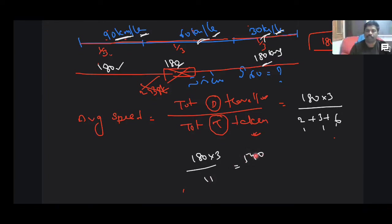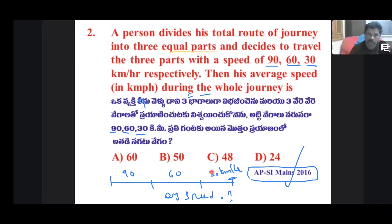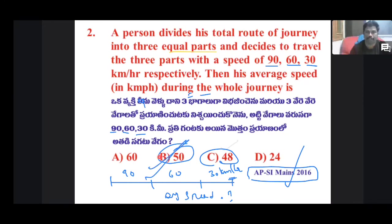The exact answer is 49.1, but in the options, the range given is 48 to 51. The nearest value to 49.1 is 50, so the answer is 50. That is the correct option answer. Clear.